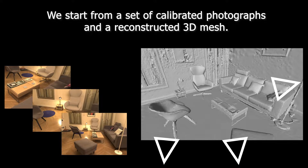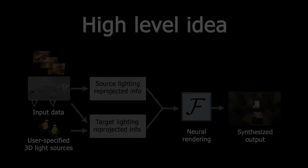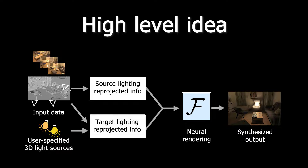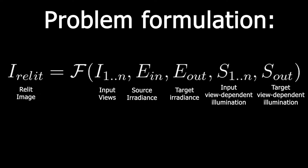We start from a set of calibrated photographs and a reconstructed 3D mesh. To generate a novel view, pre-computed scene and lighting information is reprojected and passed to a neural rendering network. We propose to estimate the relit image as a function of the input views, the source diffuse irradiance, the target diffuse irradiance, the source mirror images, and a target mirror image.